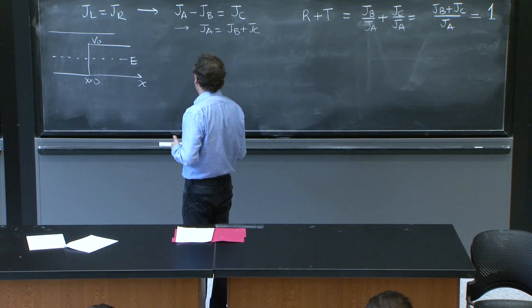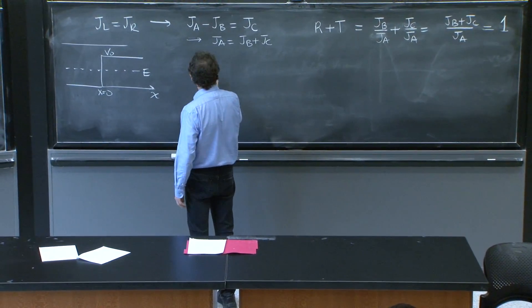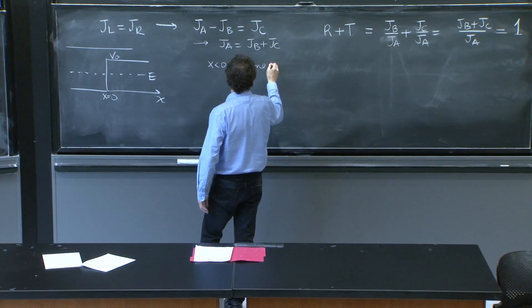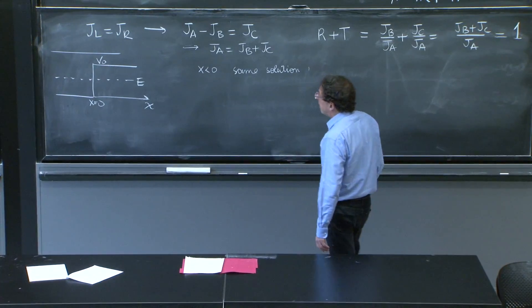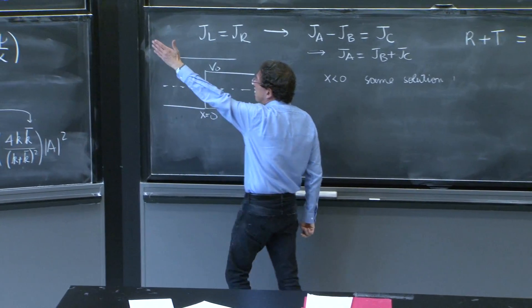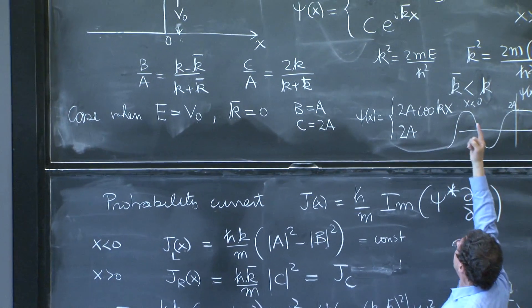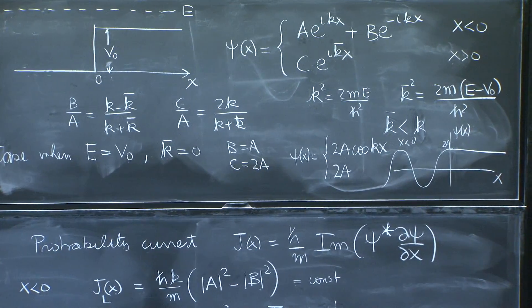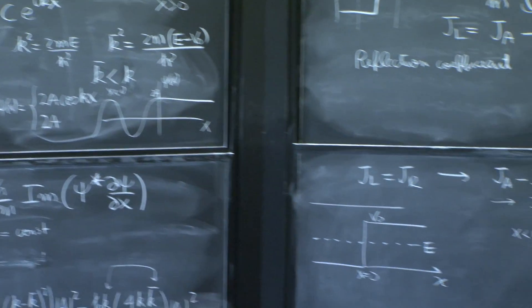We first say that the solution is the same for x less than 0. So for x less than 0, we write the same solution. Because the energy is greater than 0, and all what we said here, the value of k squared, a e^(ikx), b e^(-ikx), it's all good. And k squared is still 2me over h-bar squared.